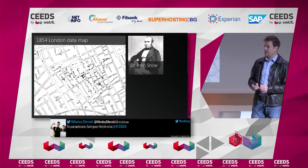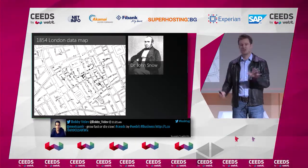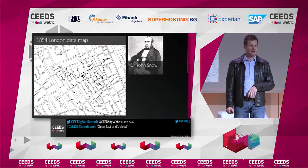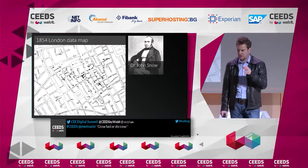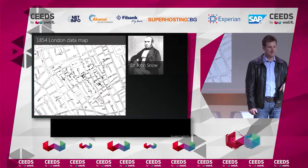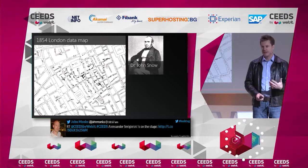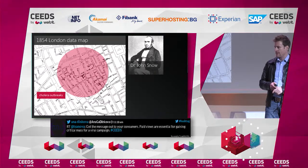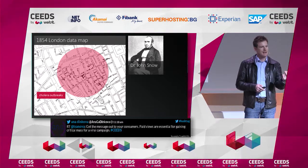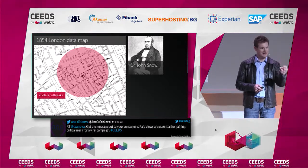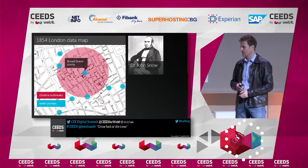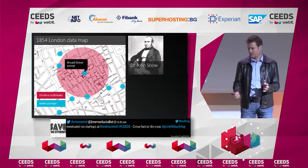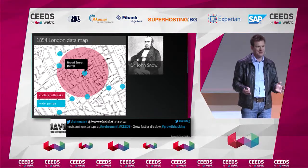So back in 1854 in London, Dr. John Snow was curious about the cholera outbreaks. Because everyone thought it was an airborne disease, and he was sure it was not airborne — it's actually a waterborne disease. So the approach he took was: let's plot the outbreak on a map. And because he believed it's a waterborne disease, he started to plot the wells — basically the water pumps — on the very same map. And to him, it was a clear indication that if you look at this, it must be the Broad Street water pump which causes the disease.